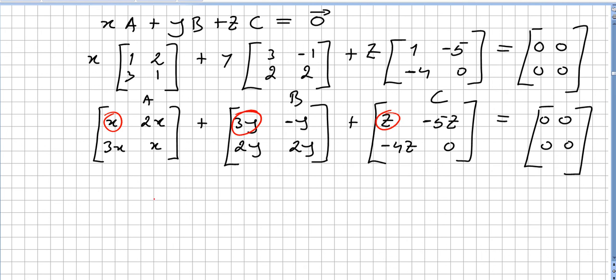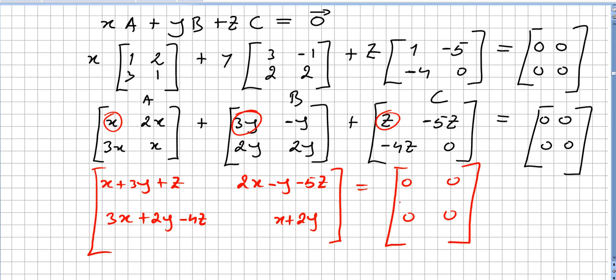The first entry will be this one. x plus 3y plus z. And check if adding all these, x plus 3y plus z here, and this one plus this one plus this one. And you have to get this zero here. 3x, 2y minus 4z, and x plus 2y minus z.